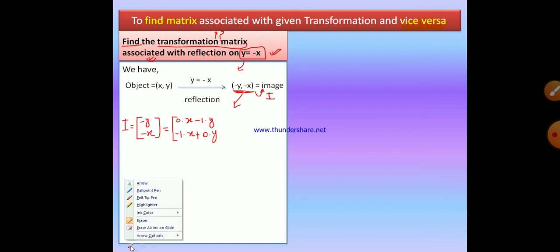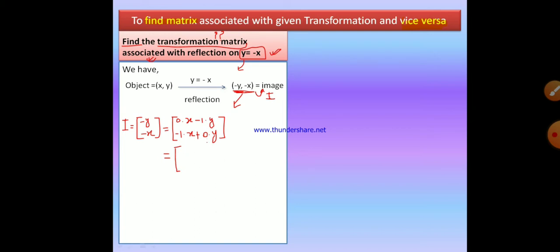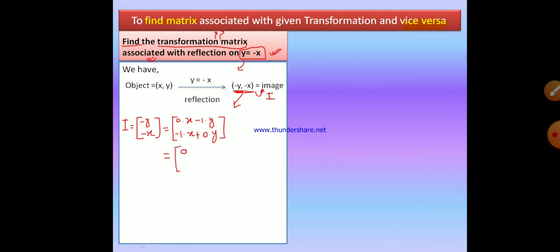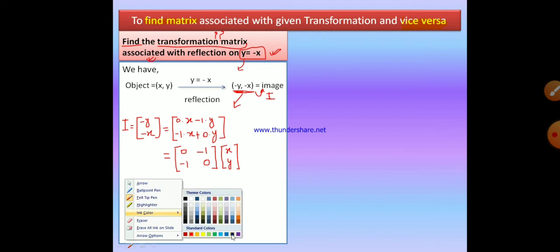We write the image in matrix form and expand in terms of x and y. If x is missing, its coefficient is 0; if y is missing, its coefficient is 0. From this single matrix we form two matrices as a product: one matrix is formed by taking only the coefficients, which are 0, minus 1, minus 1, and 0. The other matrix contains the variables x and y. In this way we decompose a single matrix into two matrices in product form.